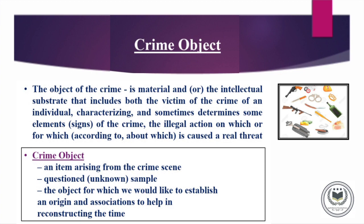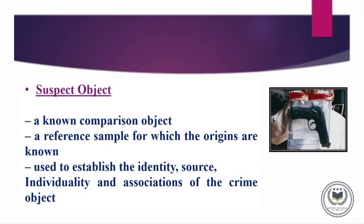Our next topic is Crime Object. Crime Object is material or anything which can establish the origin and association regarding the Crime Scene and can help to recreate the timeline. It is an Unknown Questioned Sample through which we can further detect the situation of the Crime. Now, what is Suspect Object? Suspect Object is basically a Comparison Object — a Reference Sample whose origin is previously known. It is used to establish identity, source, association, and individuality with the Crime Scene. The main difference between Crime Object and Suspect Object is that we already know the origin of the Suspect Object.